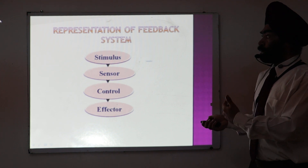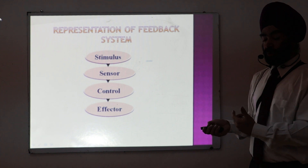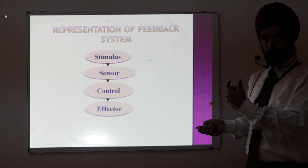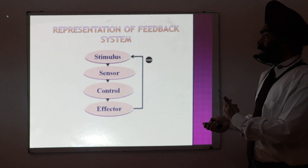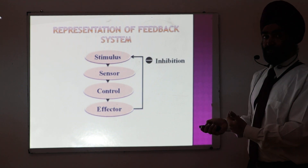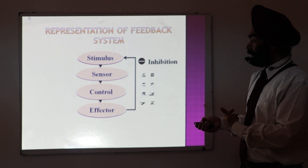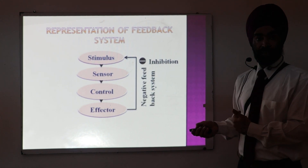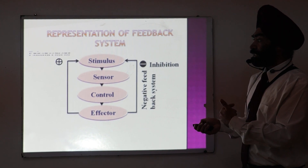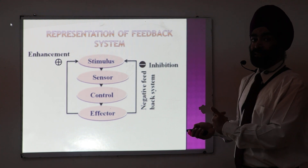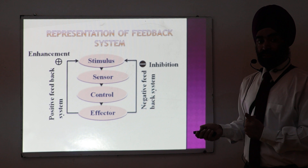There is a stimulus, a sensor, a control, and an effector — one controlling the other. If the effector is controlling the stimulus in a negative manner — that is, the effector is inhibiting the stimulus — we say there is a negative feedback mechanism. On the other hand, if the effector is stimulating and having an enhancement effect, we say it is a positive feedback mechanism.